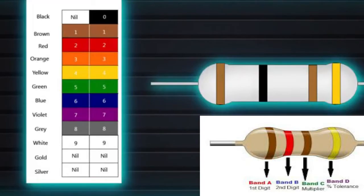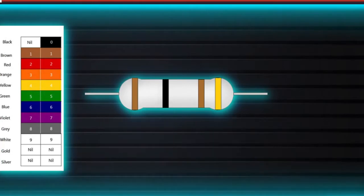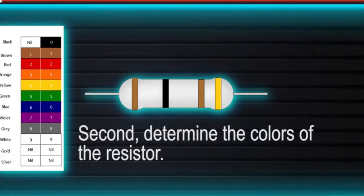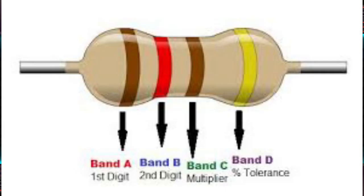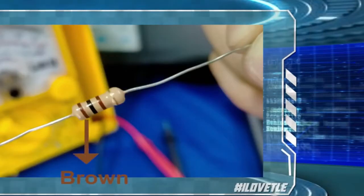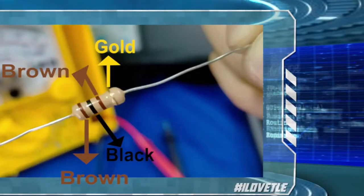Resistors are used to reduce current flow, adjust signal levels, divide voltages, bias active elements, and terminate transmission lines. How to read a resistor's value the easiest way? First, you need to have a resistor color guide. Second, determine the colors of the resistor. In my example, my resistor's colors are brown, black, brown, and gold.